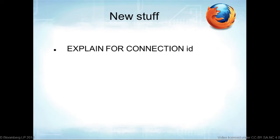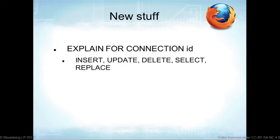EXPLAIN FOR CONNECTION ID is a new feature. Instead of doing SHOW FULL PROCESSLIST and copy-pasting the query to run EXPLAIN on it, you can just run 'EXPLAIN FOR CONNECTION 12' to get the explain plan for whatever query is running on that connection. It works for INSERT, UPDATE, DELETE, SELECT, and REPLACE. MariaDB already has this as 'SHOW EXPLAIN FOR <process_id>' since 5.6 — both databases independently implemented this useful feature.